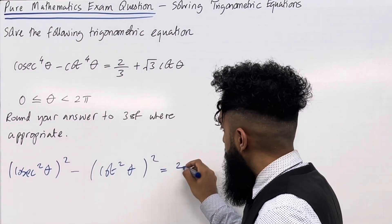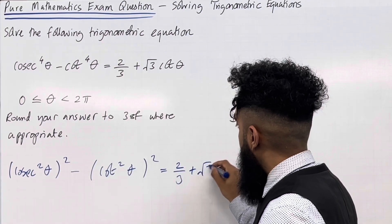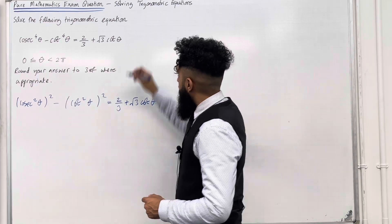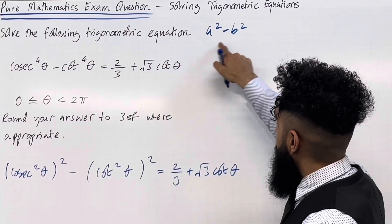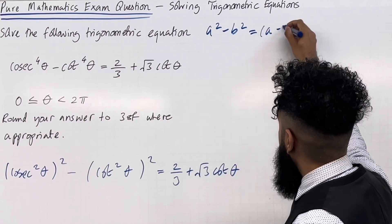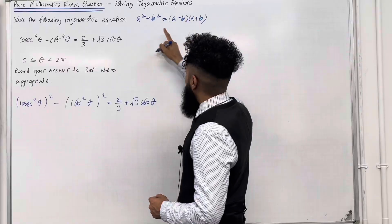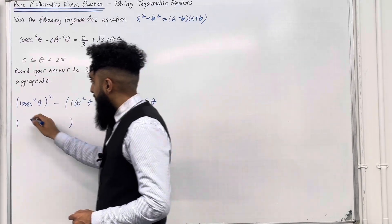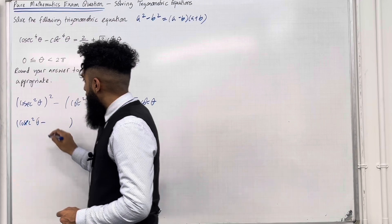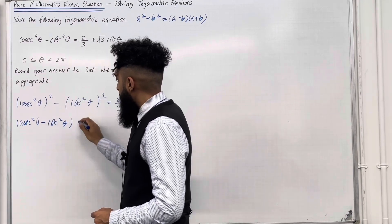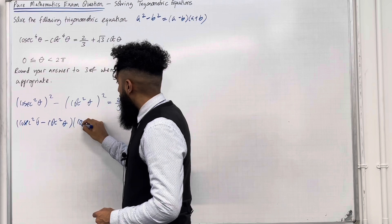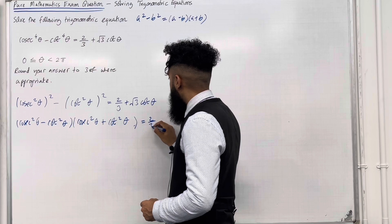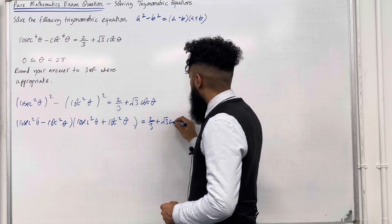This equals 2 over 3 plus square root 3 cot theta. Notice that we have a difference of two squares: a squared minus b squared factorises into (a minus b)(a plus b). Using that result, the first bracket is cosec squared theta minus cot squared theta, and the second bracket is cosec squared theta plus cot squared theta, equal to 2 over 3 plus square root 3 cot theta.